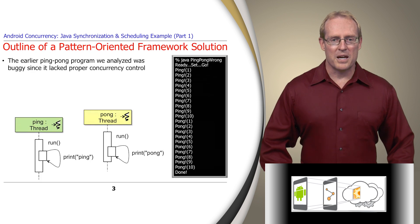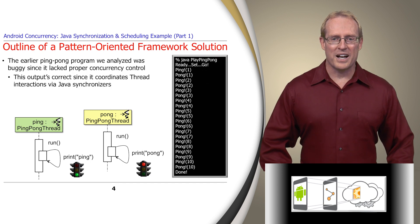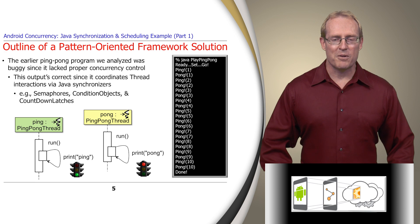The ping pong program presented earlier lacked proper concurrency control, so its output was incorrect. In contrast, the example we analyze now works correctly since it coordinates thread interactions via Java synchronizers, such as semaphores, condition objects, and countdown latches.